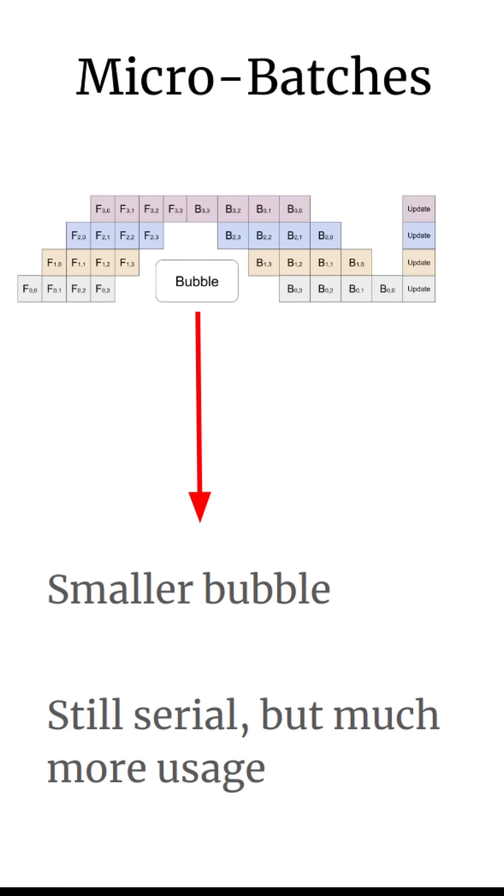So in this example here, we have four different micro-batches. Each of them are computed in this serial fashion, both for the forward pass and for the backwards pass. We still have this bubble, but you can see that we're getting many more steps where multiple of our GPUs are working simultaneously. So we didn't do anything to fix the serial problem, but we are getting much more usage of our system.